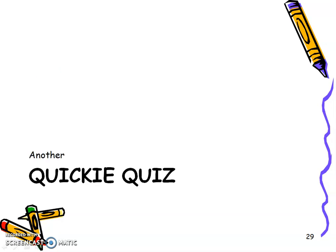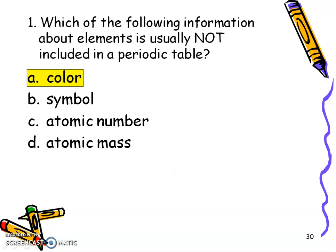All right, can you handle this quiz? Pause the video, read. Oh, and I gave you the answer. Oh my goodness, which of the following information about elements is usually not included in a periodic table? It is usually color. So almost every single periodic table gives you at least the symbol, the name usually, an atomic number, an atomic mass, but they don't always give you a color of that element. And actually, some elements do have some really pretty colors.